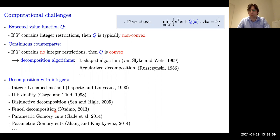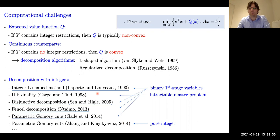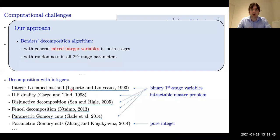If we focus on these methods more closely, we see that the integer L-shaped method is really developed for the special case where all first stage decision variables are binary. Going through this list, this restriction holds in more of these papers—one applies only to pure integer models where all decision variables are integer, and another based on ILP duality has an intractable master problem, so it's more theoretical in nature. This explains our contribution: we also have a Benders decomposition algorithm with integer decisions in the second stage, but dealing with general mixed integer variables in both stages and randomness in all second stage parameters.